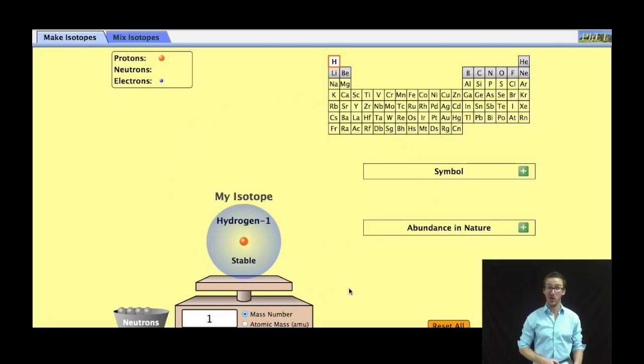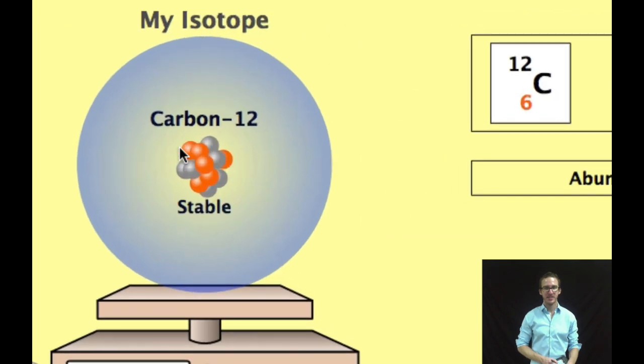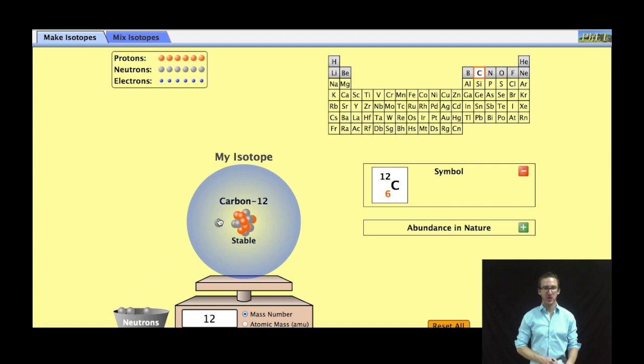One of those interactives is this one which allows you to sort of build different isotopes. So for example I might choose carbon. Currently I have an isotope of carbon-12 because I have six positive protons and six neutral neutrons. But then you can add neutrons here to get different isotopes of that same element.